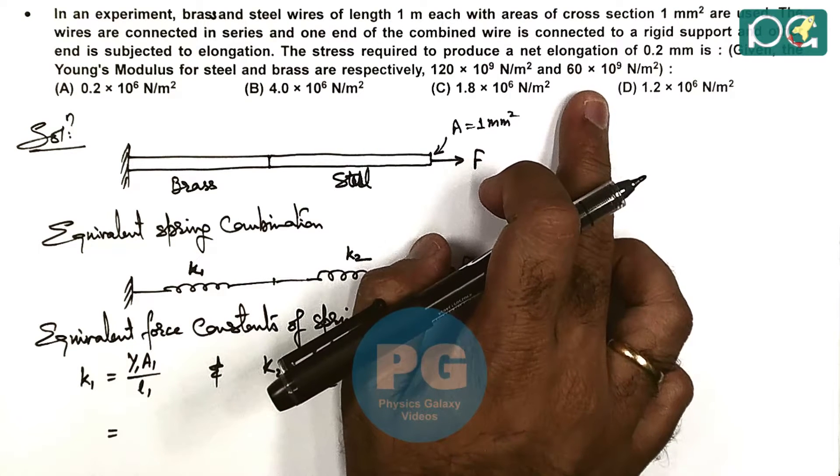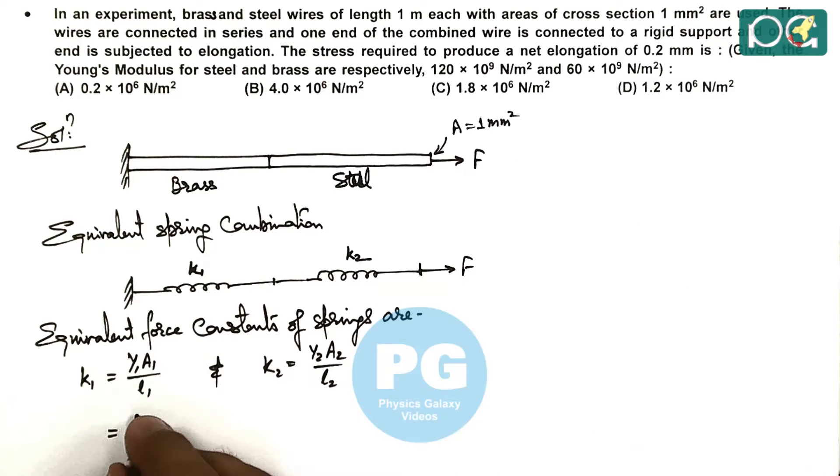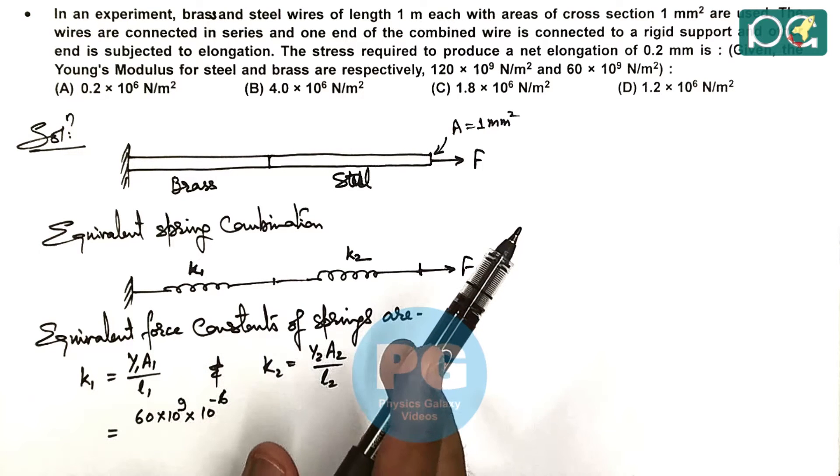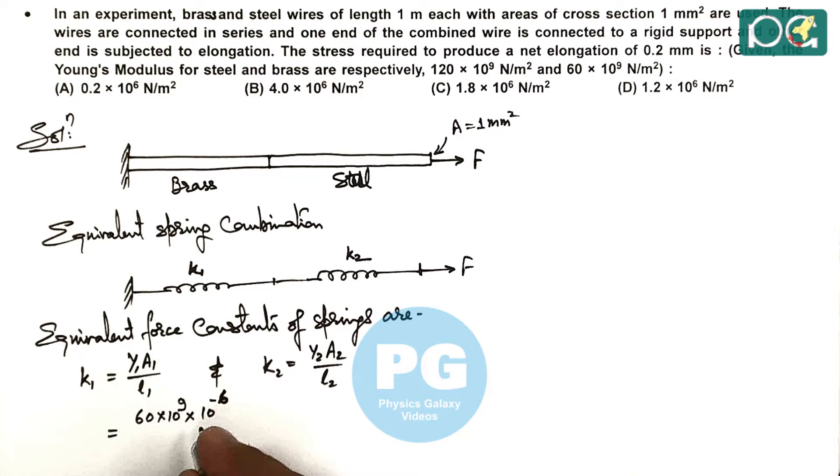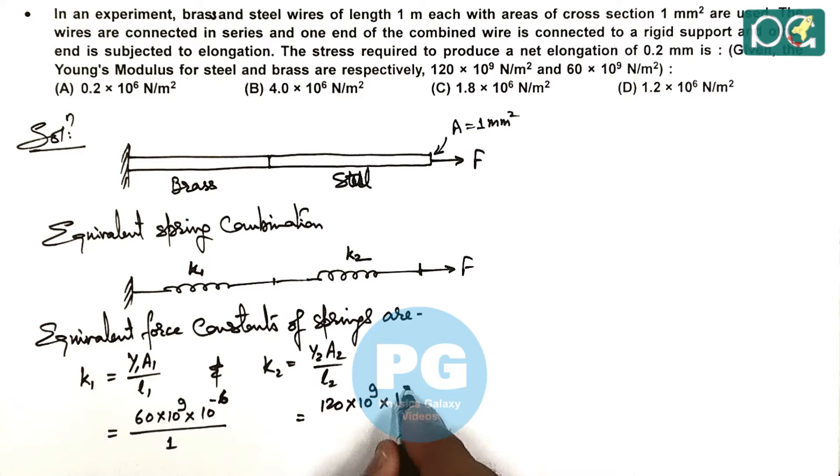Here we can write K1 as 60×10^9 multiplied by area, which is 1 mm² = 10^-6 m². This is 1 mm = 10^-3, squared is 10^-6, divided by length which is 1 meter. K2 here is 120×10^9 multiplied by 10^-6 divided by 1. So we have got the values of K1 and K2, and the unit will be Newton per meter.